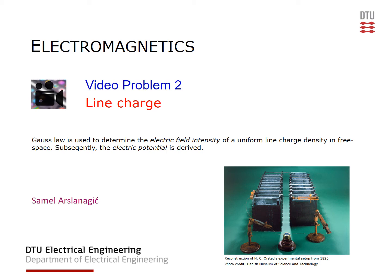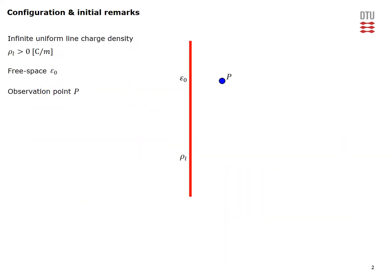This is video problem 2. We are considering the configuration of a line charge and will use Gauss's law to determine the electric field intensity of a uniform line charge density in free space. Afterwards we will also determine the associated electric potential. We consider an infinite uniform line charge density, assumed positive, located in free space with permittivity epsilon naught.